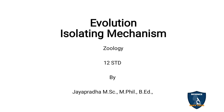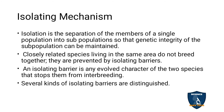Today we are going to discuss the isolating mechanism in evolution. Isolating is the separation of the members of a single population into a subpopulation so that the genetic integrity of the subpopulation can be maintained. So isolating means you are separating a particular person from the population — that is called isolating.